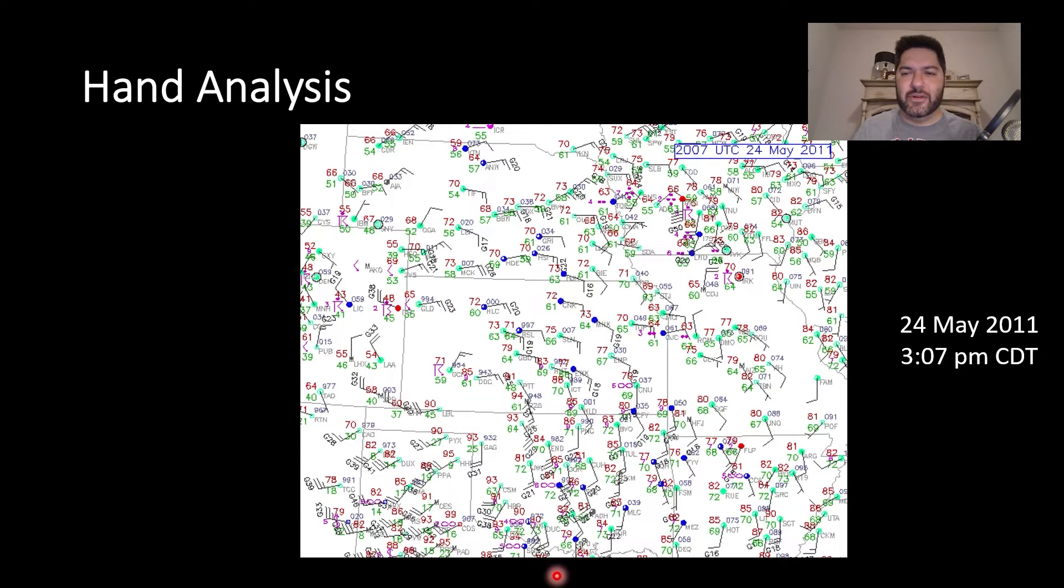So hand analysis. The same weather chart or surface map here from May 24th, 2011. Let's throw in some hand analysis. So this is what is known as the 70-degree isodrosotherm, which is just a fancy way of saying a line of constant dew point.